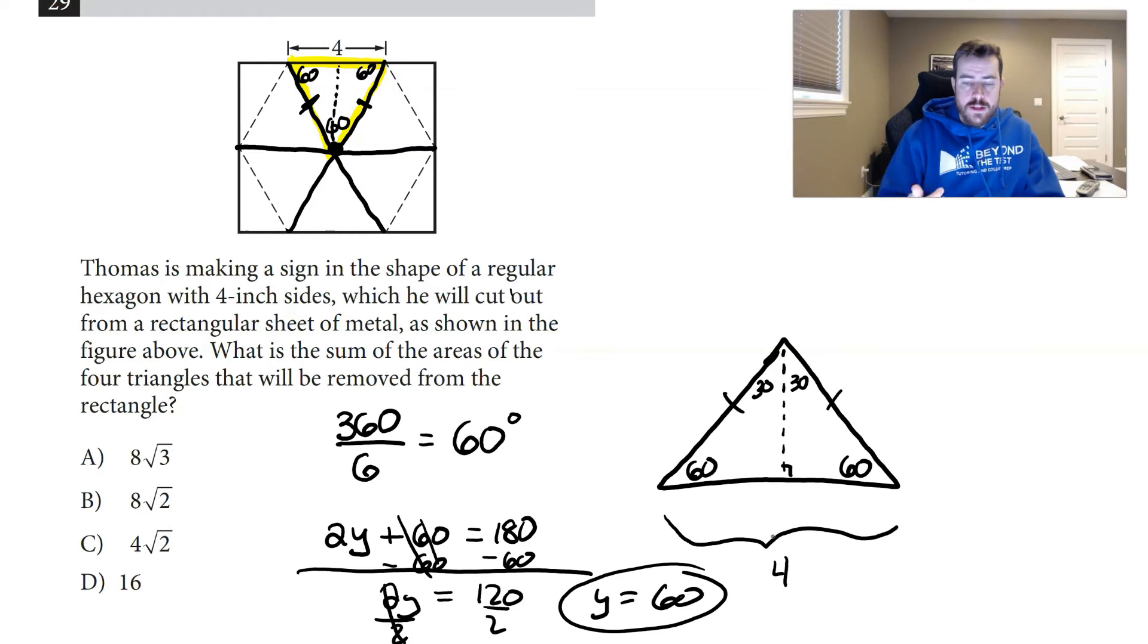When you draw the altitude of an equilateral triangle, it's also the same thing as drawing the median, which means the two sides here are going to be equal. So if the whole thing is 4, we're going to get 2 and 2 for each side.